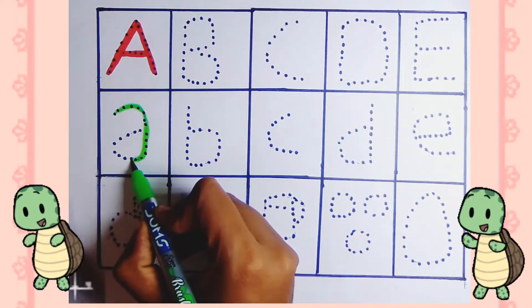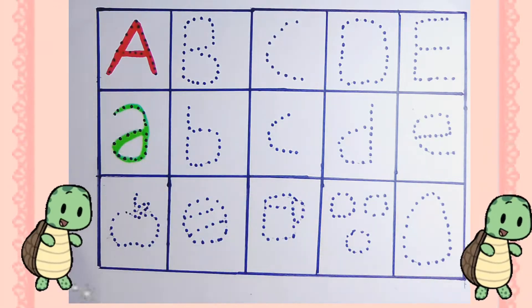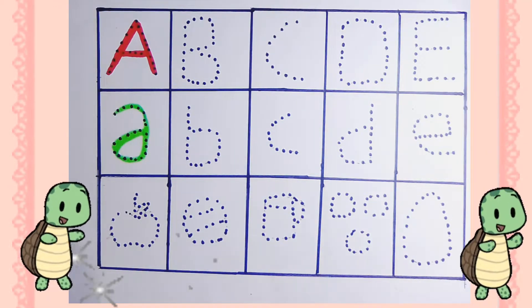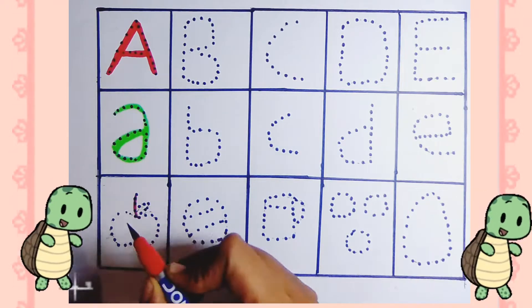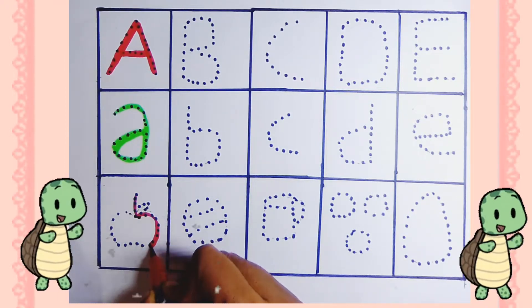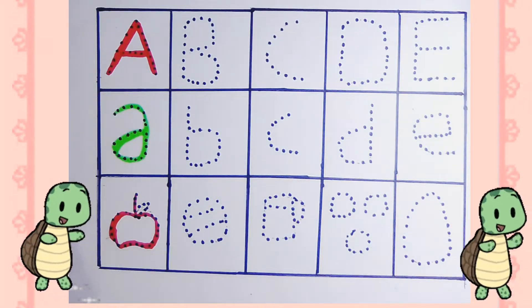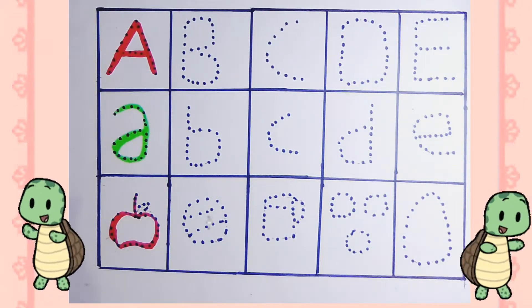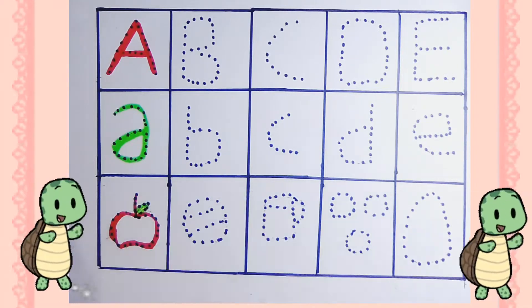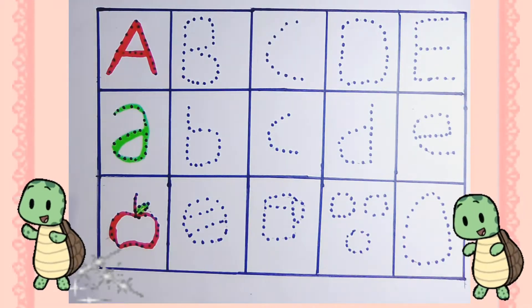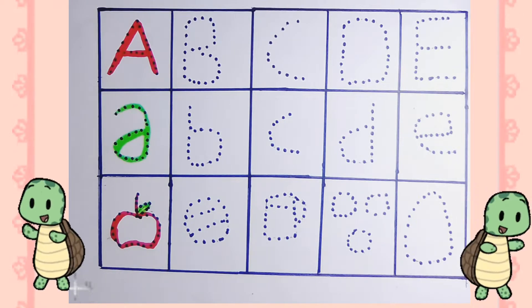C, D, E, F, G, H, I, J, K, L, M, N, O, P, Q, R, S, T, U, V, W, X, Y, and Z. Now you know your ABCs, next time won't you sing with me.